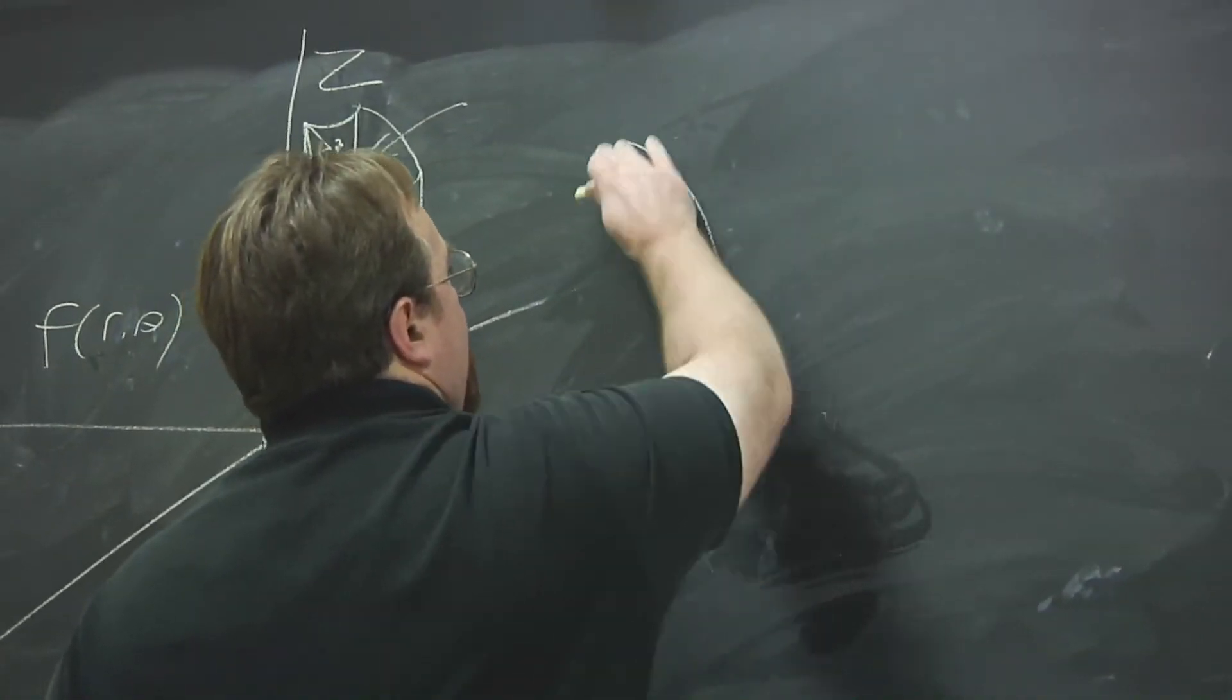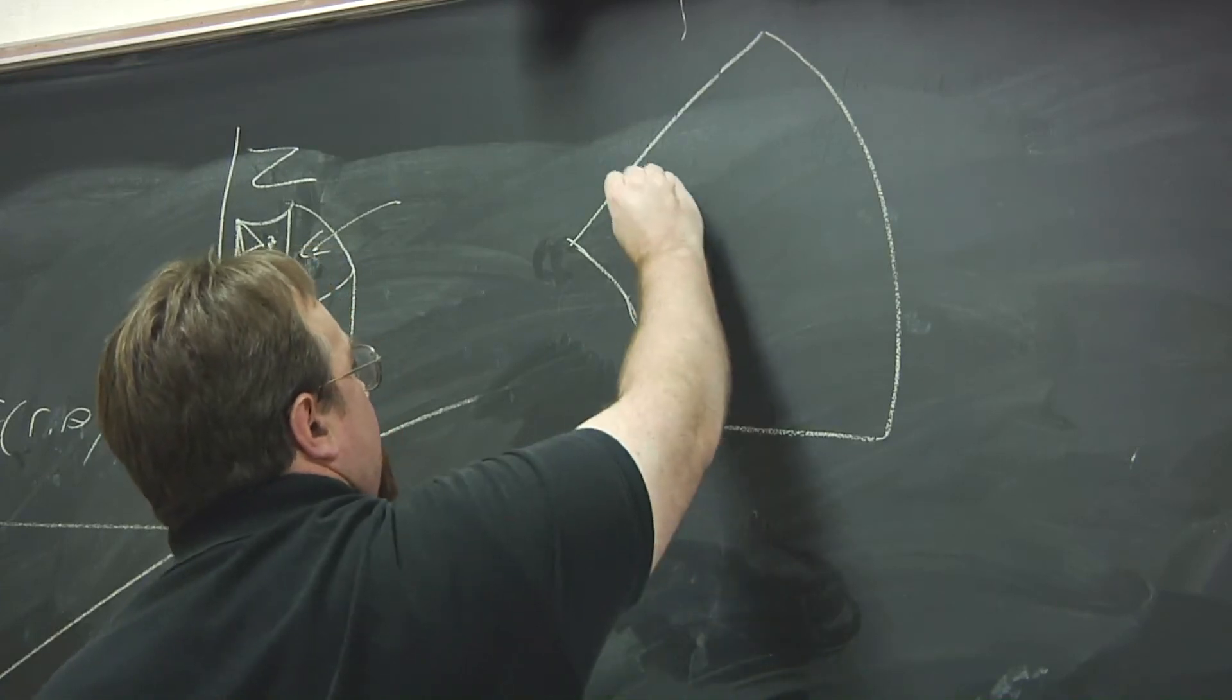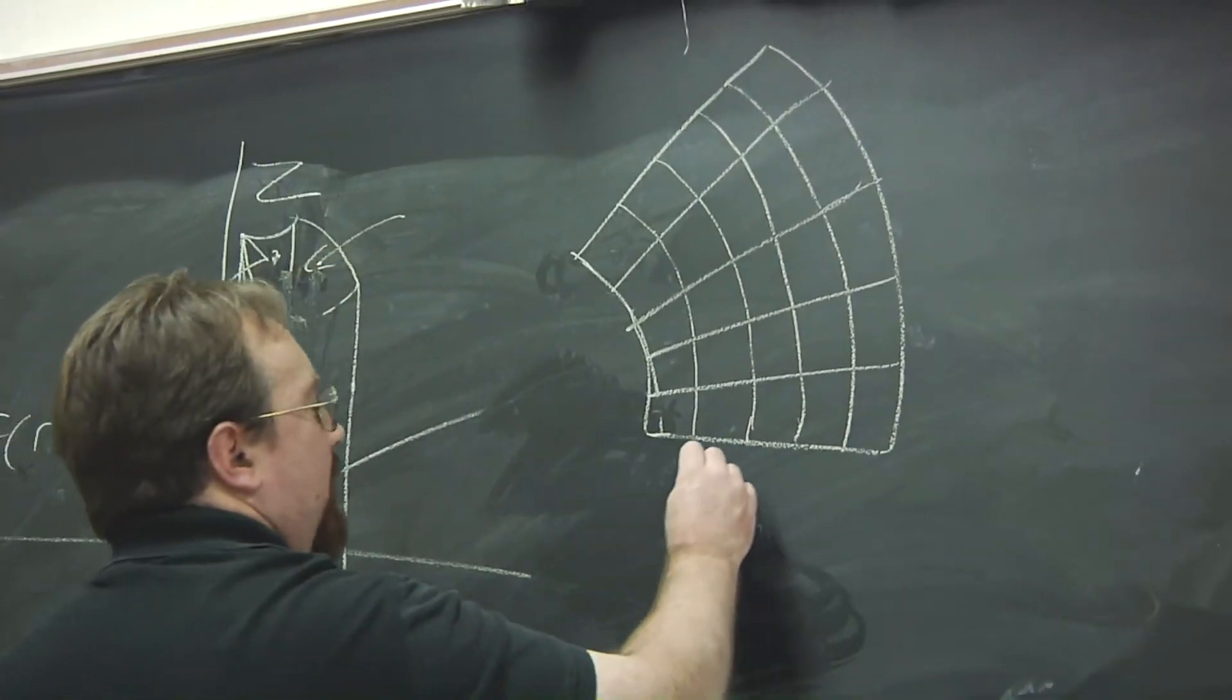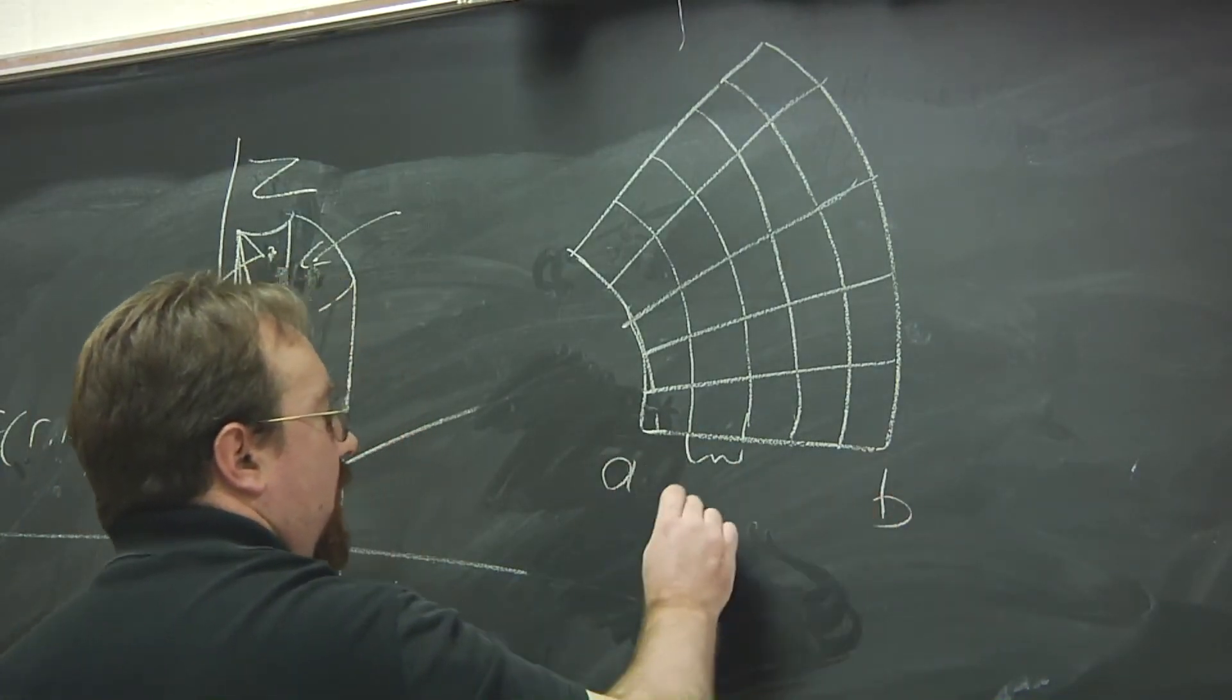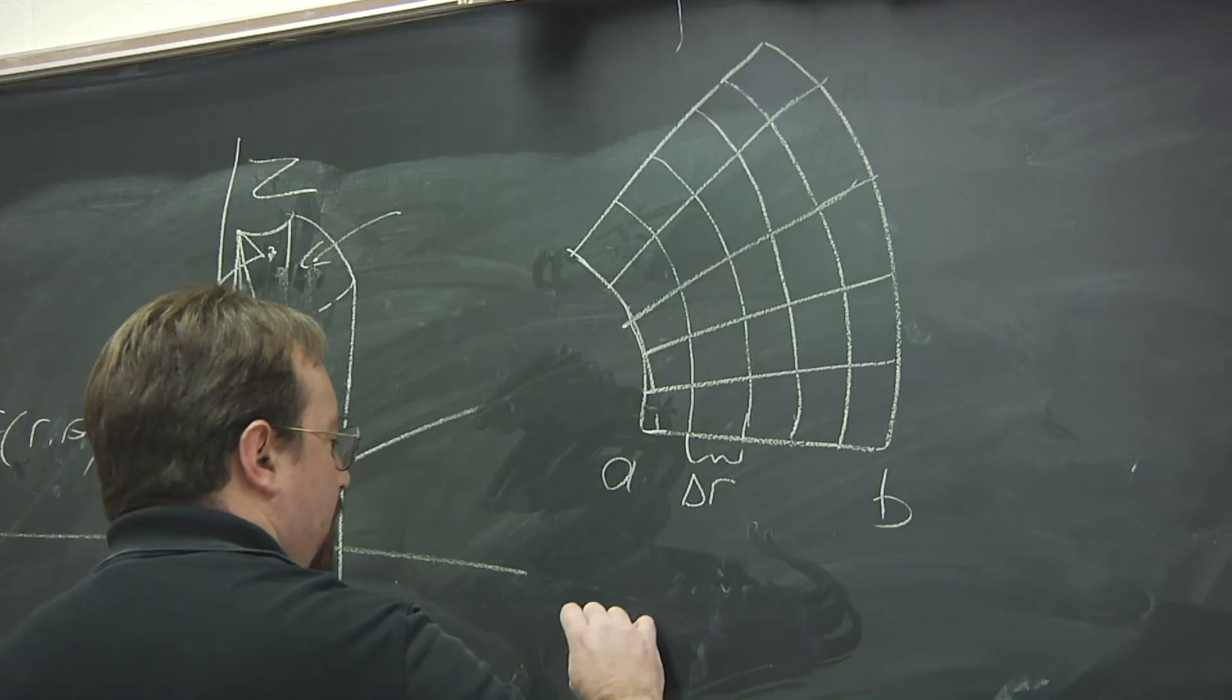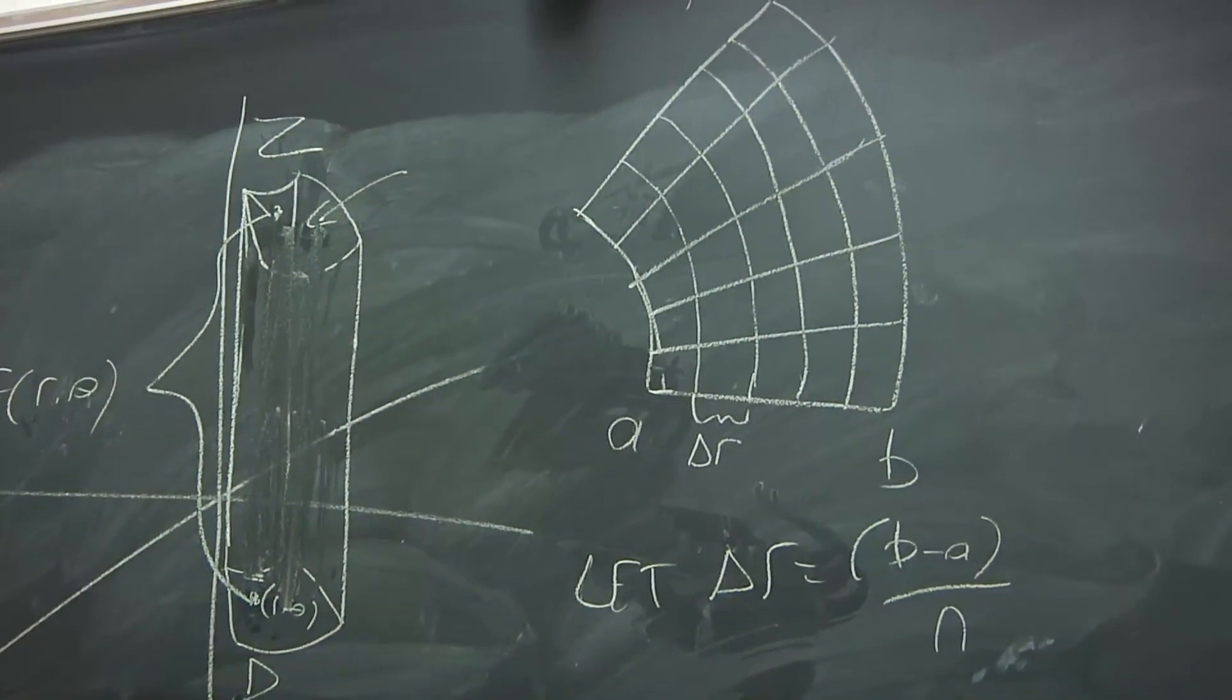If we take a closer look at our polar rectangle, what we can do is divide it into several smaller polar rectangles. So in this case, I've divided this interval from a to b in r into, in this case, five subintervals with delta r. So we let delta r be b minus a over n, where n is the number of subintervals, in this case n equals five.